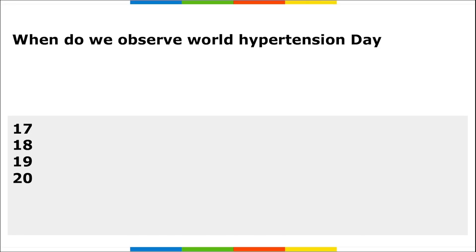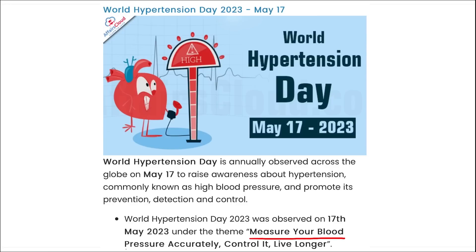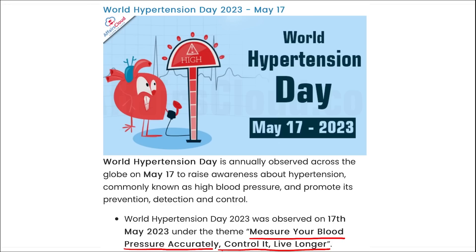When do we observe World Hypertension Day? This day is also observed on 17th of May to raise awareness about hypertension, commonly known as high blood pressure, and to promote its prevention, detection, and control. The theme is 'Measure Your Blood Pressure Accurately, Control It and Live Longer.' We have been observing this World Hypertension Day on 17th May since 2016.